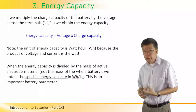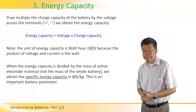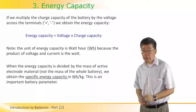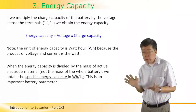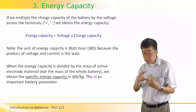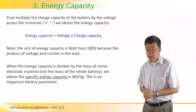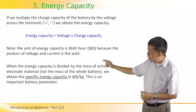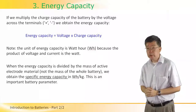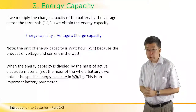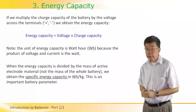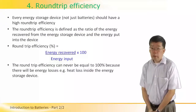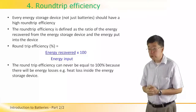If we divide the energy capacity of the battery by the mass of the active electrode material — not including the mass of the electrolyte or casing, just the electrodes — we obtain a quantity called the specific energy capacity, measured in watt-hours per kilogram. This is an important battery parameter.